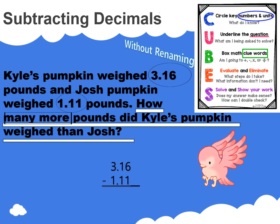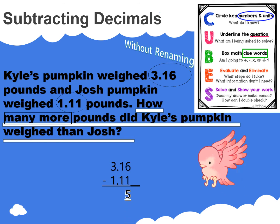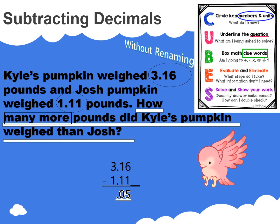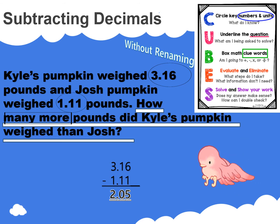We will use a subtraction number sentence to solve. Line up your numbers. One hundredth from sixteen hundredths leaves five hundredths. One tenth from one tenth leaves zero tenths. Place your decimal point. One one from three ones leaves two ones. Kyle's pumpkin weighs 2 and 5 hundredths more than Josh's.